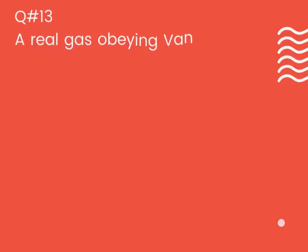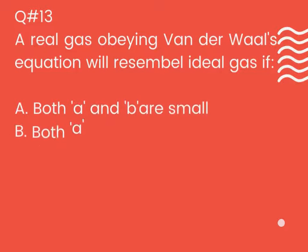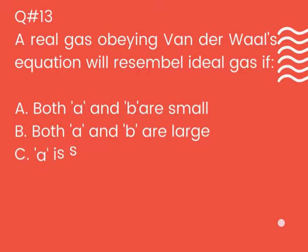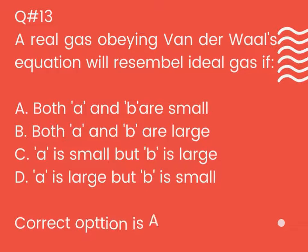Question number 13. A real gas obeying the van der Waals equation will resemble an ideal gas if: A. Both a and b are small. B. Both a and b are large. C. a is small but b is large. D. a is large but b is small. Correct option is A.